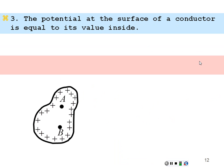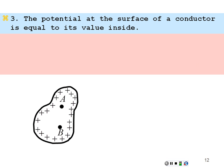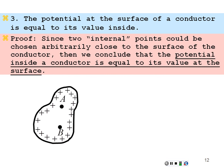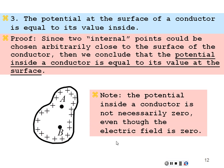The potential at the surface of a conductor equals its value inside. We know the surface potential is constant and the interior potential is constant. Selecting two points arbitrarily close to the surface from inside, we conclude there's no reason the surface value would differ from a point just inside. So the potential is constant all the way through to the surface itself — not necessarily zero, but uniform throughout.